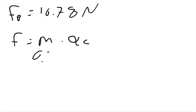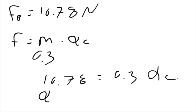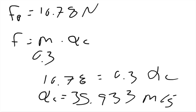We know what the mass is, 0.3. So we can say that 10.78 equals 0.3 times the centripetal acceleration. You divide by 0.3. So the centripetal acceleration equals 35.933 meters per second squared.